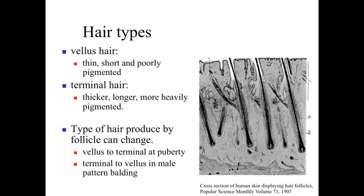In male pattern baldness, an individual can have terminal hair being produced up until a point, and then the follicles start producing vellus hair instead — relatively thin, short, and poorly pigmented — so it looks like there's no hair there at all.